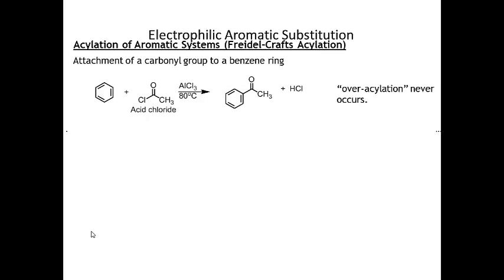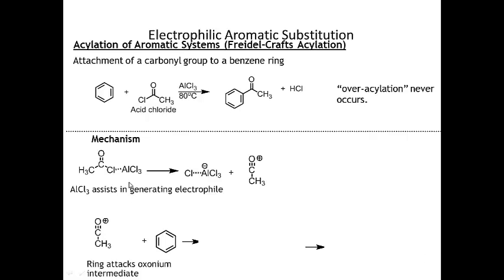The last reaction under electrophilic aromatic substitution is Friedel-Crafts acylation. Any time I add a carbonyl group to the ring, that's called acylation - the word 'acyl' indicates a carbonyl is present. I need my benzene ring and an acid chloride. In the presence of aluminum trichloride (AlCl3), I can take the acyl part of the acid chloride - meaning the carbonyl part - and add that to the ring. Notice my ring remains aromatic; none of the double bonds are broken.